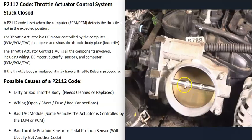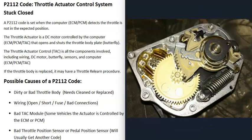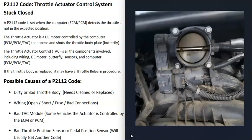Another thing that can happen is the plate is binding up or stuck because it's not lined up correctly. There's also that small motor inside that the computer controls to open and shut the plate, along with gears and other components. If anything goes wrong with that motor or those gears, that's going to cause problems. Sometimes you can hear that motor or those gears making a noise — like a whining or grinding noise around the throttle body when the plate is opening and shutting — which can be a sure sign of an issue. If the motor has burned up or there's an issue with the gears, it's usually best to just replace the whole throttle body.